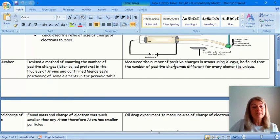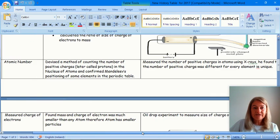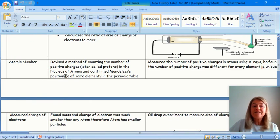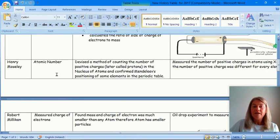He found that the number of positive charges was different for every element. Every single different kind of atom had a unique one. All the hydrogens had a positive charge of one, helium always had a positive charge of two. Regardless of anything else, they were constant. He confirmed Mendeleev's positioning of some elements in the periodic table. We will deal with that in the lesson on the periodic table.